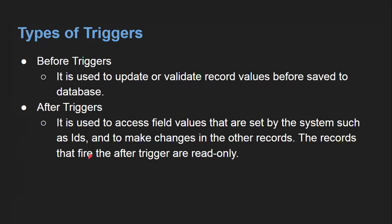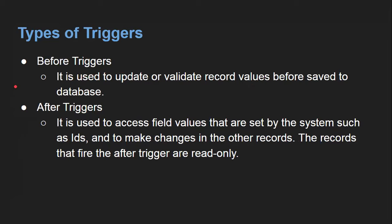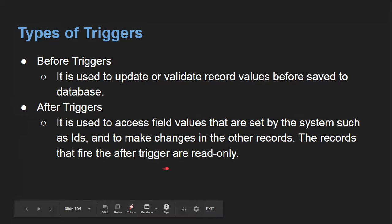Let's understand the theoretical concepts related to triggers. We have two types of triggers: before triggers and after triggers. Before triggers are used to update or validate record values before they are saved to the database. After triggers are used to access field values set by the system, such as IDs, and to make changes in other records. The records that fired the after trigger are read only.